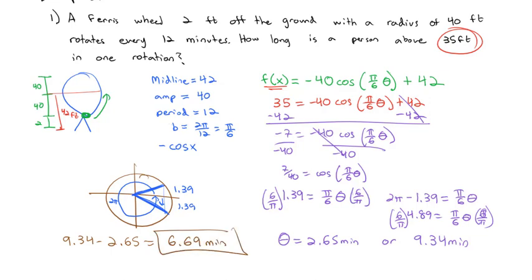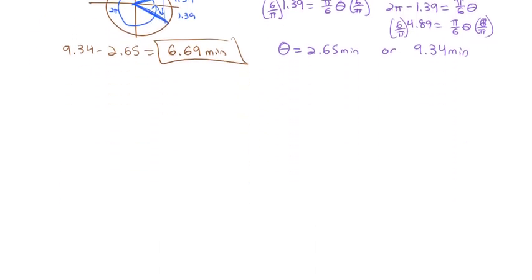Just over 6 and a half minutes, almost 6 and 3 quarter minutes. Out of that 12 minute rotation, you're going to actually be above 35 feet on this Ferris wheel. And that's one way that we can model with trigonometry. Let's take a look at another model that's also interesting. There's lots of places where we can model this type of behavior. We can model the tides with the ocean.